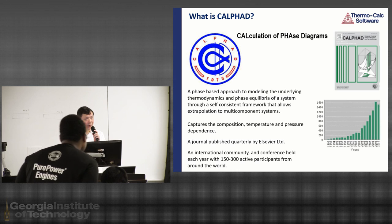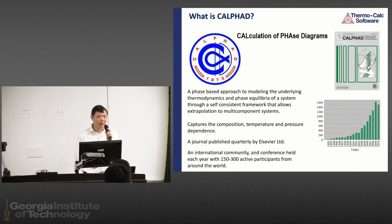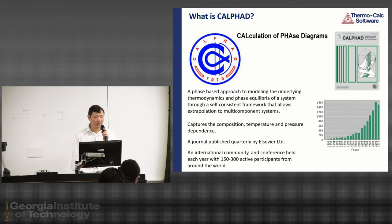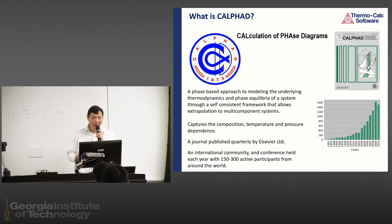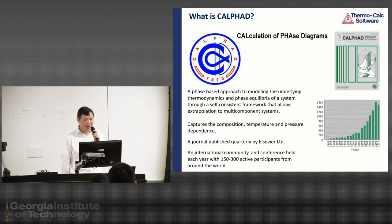Since the 1980s, we've had a bunch of software like Thermo-Calc and LUKAS programs, and later, for example, PANDAT. We developed software and databases so industry can use them to develop their alloys, providing information like phase creation, thermodynamic information, and kinetic information. The basic idea is to capture the composition, temperature, and pressure dependence using this phase-based approach. We develop Gibbs free energy models for different phases and build databases. Using theoretical background like Gibbs's theorem and phase transformation theory, we provide composition, temperature, and pressure dependence of different phases, as well as phase relations. We have a regular journal called CALPHAD, published regularly, with active participants throughout the world.